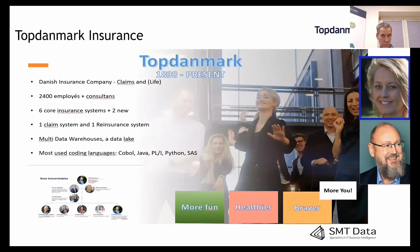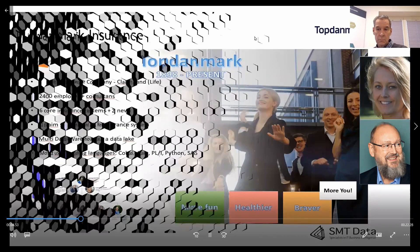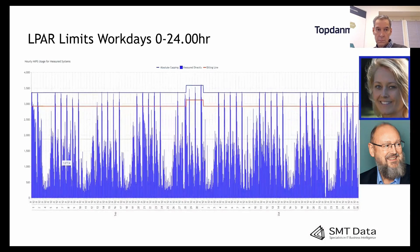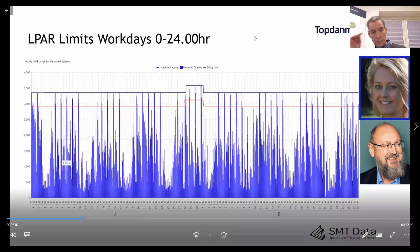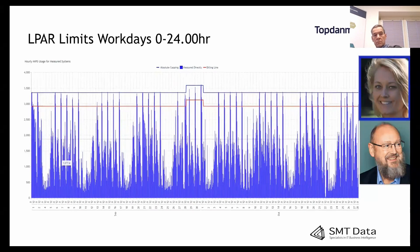Top Denmark is more than just an insurance company — we take care of employees and have an employee branding called MoreU, meaning more fun, healthier, and braver. Now for one of my favorite slides from Karsten: a picture that says more than a thousand words. I can see my capacity limit — the red line, which is my payment line and my group capacity limit. The slide covers a two-month period, 24/7, showing total capacity usage. The more blue, the heavier the load. I have two types of capacity allocation: the planned one and the here-and-now capacity.